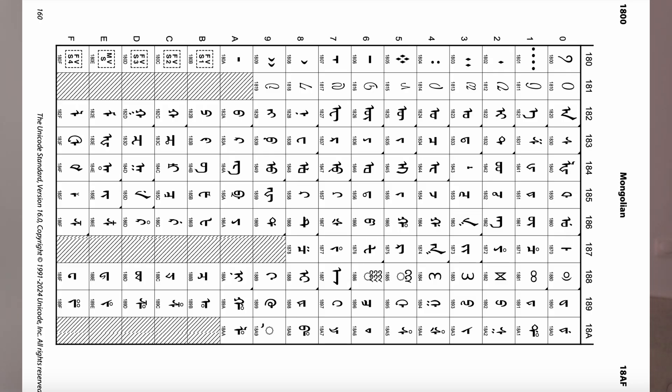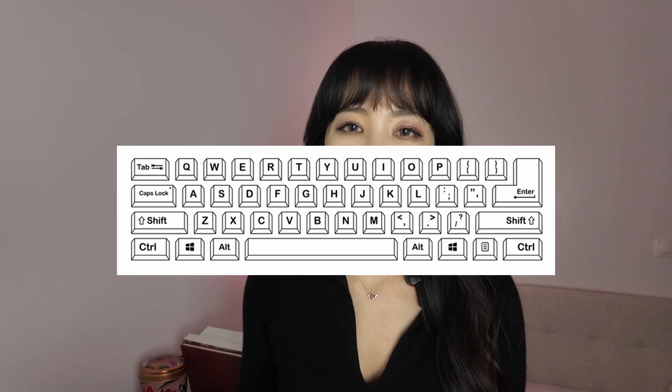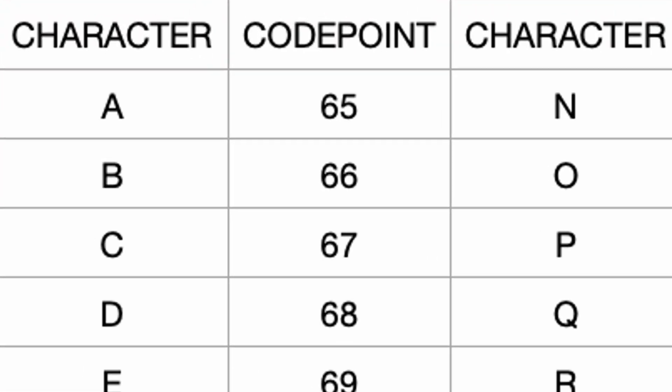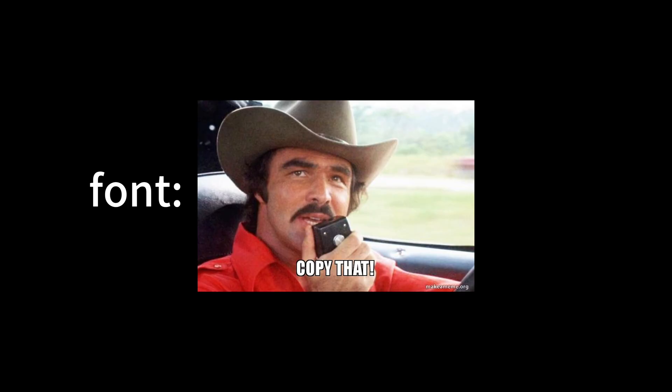In order to understand how the machine displays script on digital devices, we need to understand the role of Unicode, input method, and font. Unicode is the dictionary of computer characters. Input method is how you type, and font is how it looks. In Latin and Cyrillic, Unicode assigns each letter a code, and the input method simply maps your keyboard press to that code — for example, pressing A sends code 65, and the font displays the shape assigned to code 65. Simple.